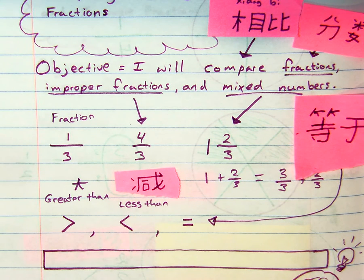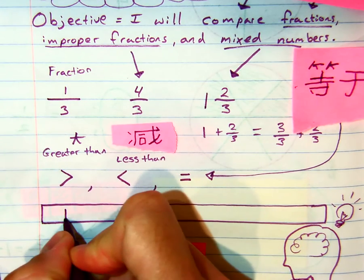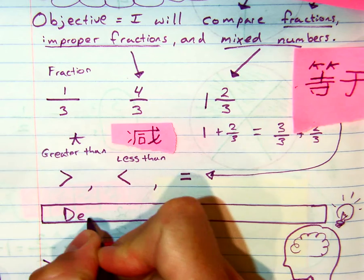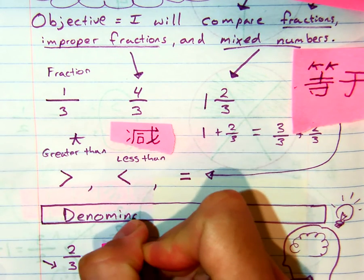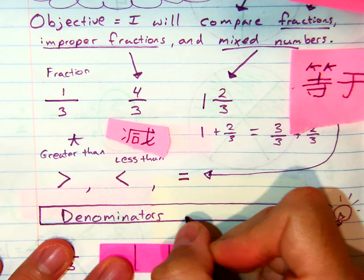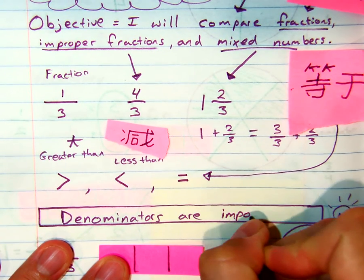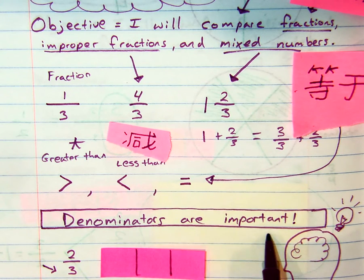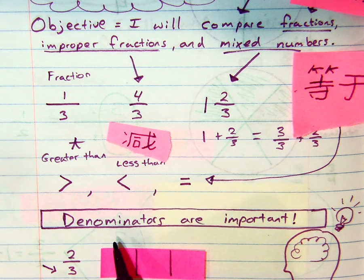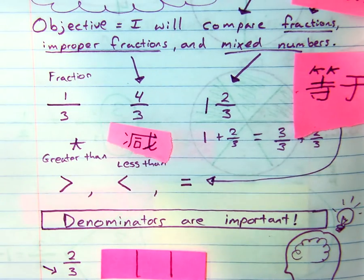Now the really important thing — and I need you to say this in a dramatic tone with me — denominators are important! Denominators are important because they give us scale, they give us size. So when we're looking at two fractions, we need to think about what the denominators tell us.